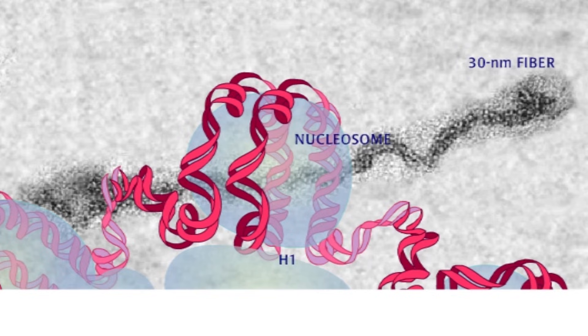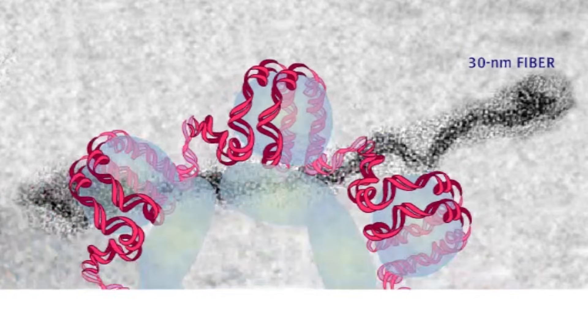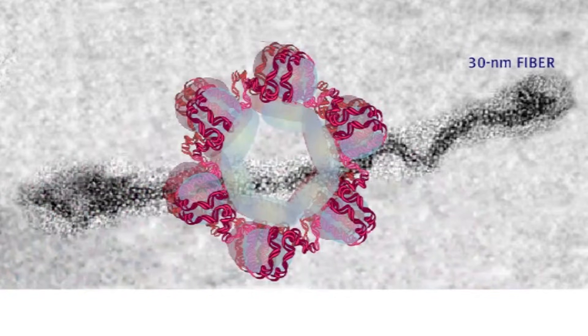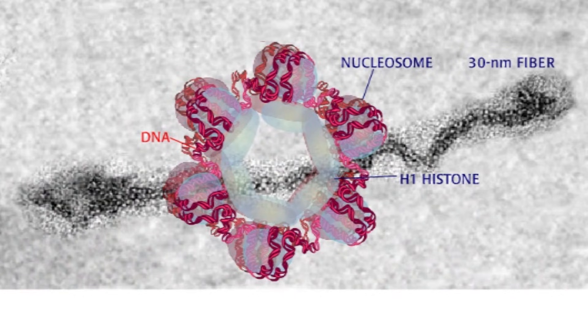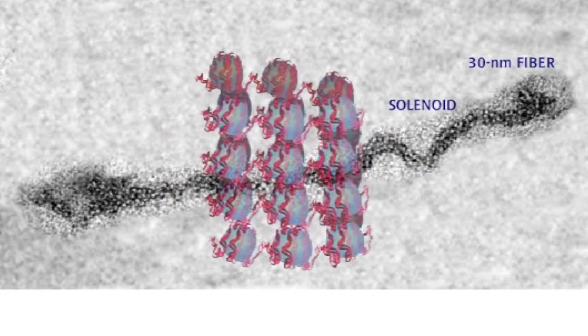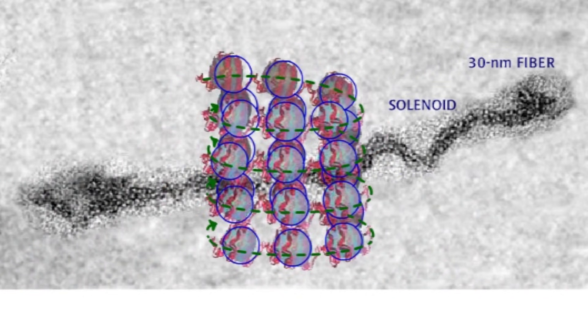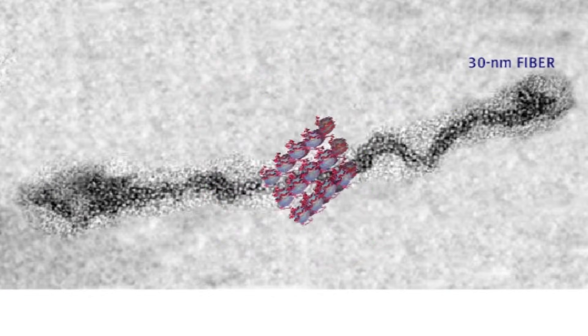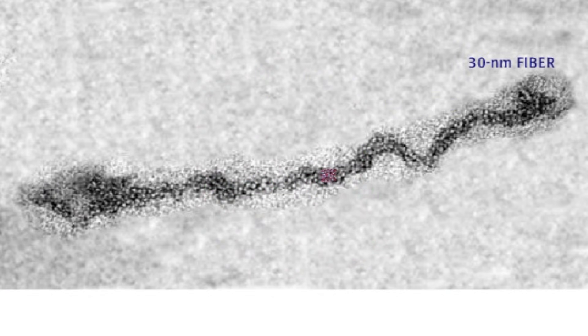At higher salt concentrations, the 10-nanometer fiber is further compacted into 30-nanometer fiber. The DNA structure is already twisted; by adding more twists to nucleosomes and solenoid structures, DNA is supercoiled. Even more organization is involved in maintaining condensed chromosomes.